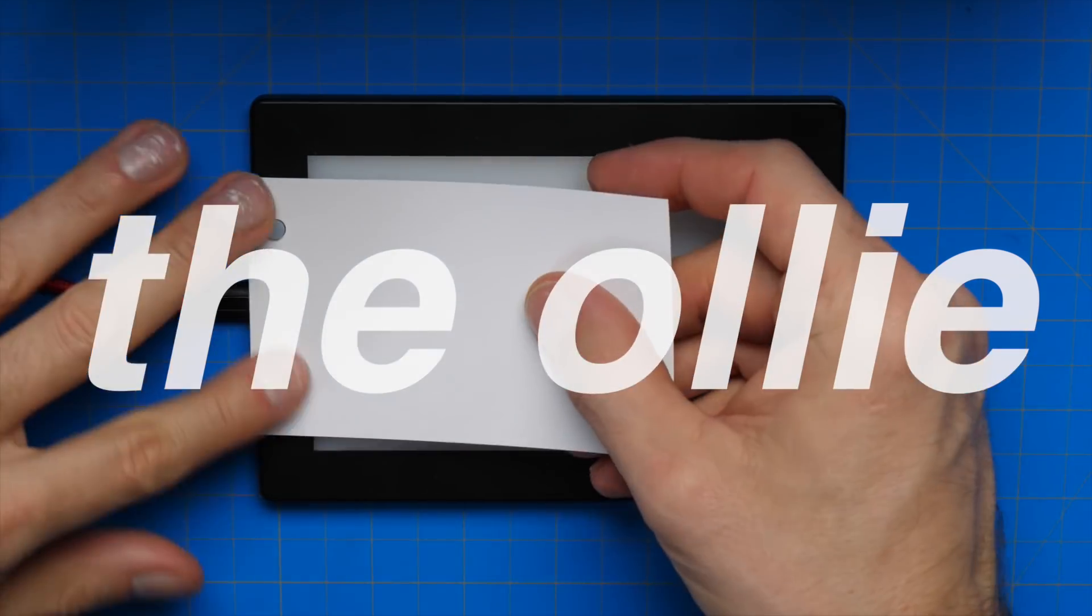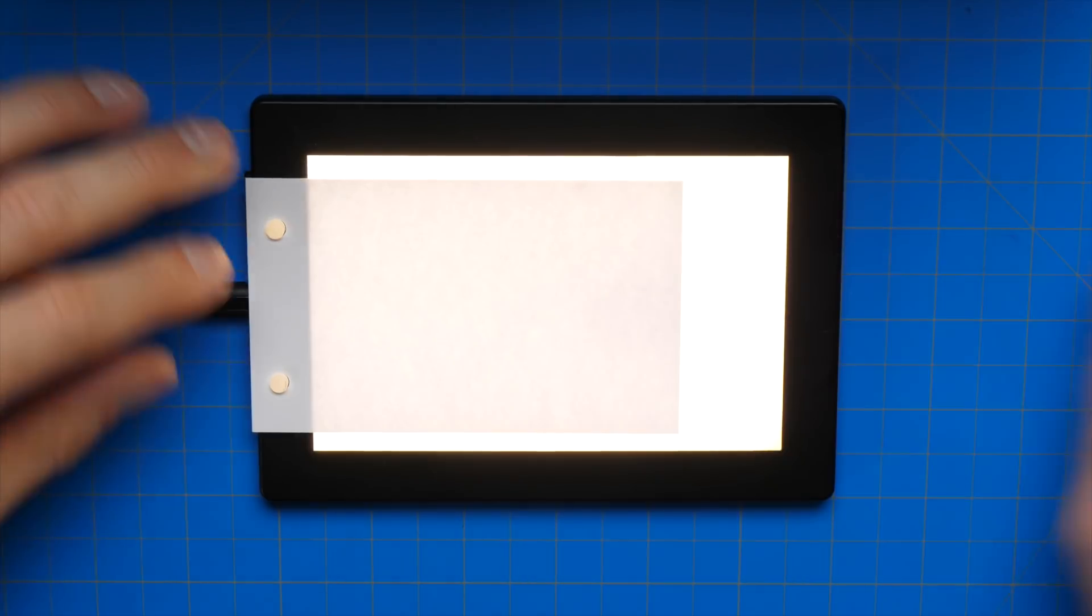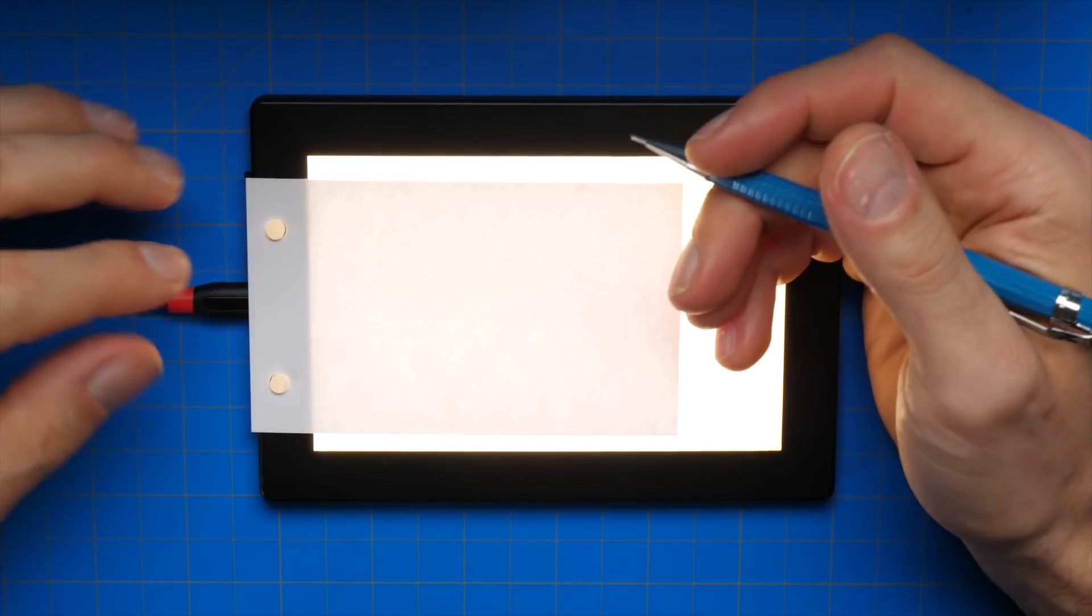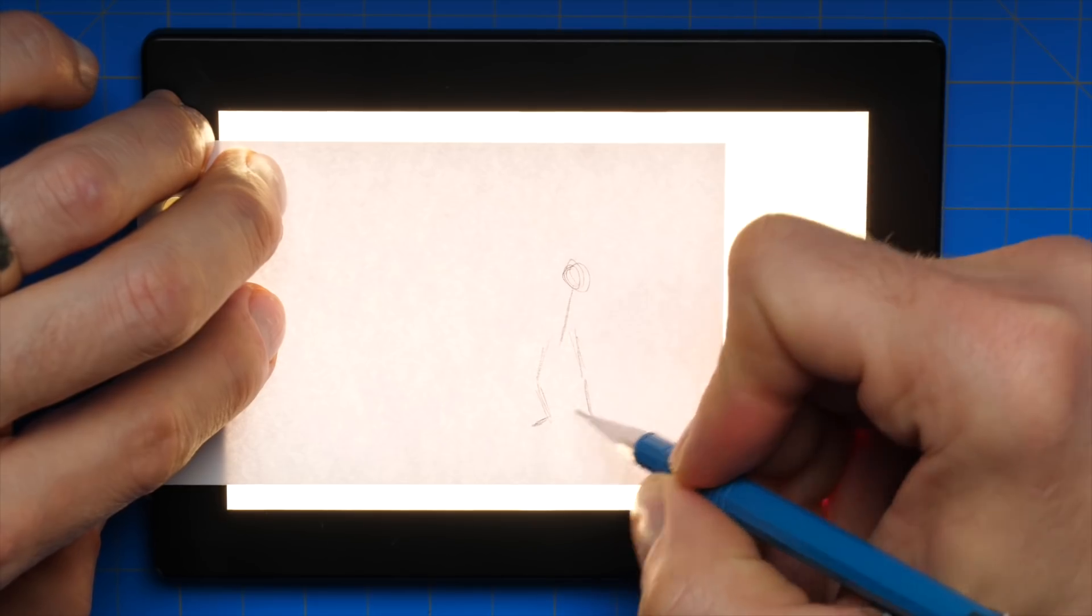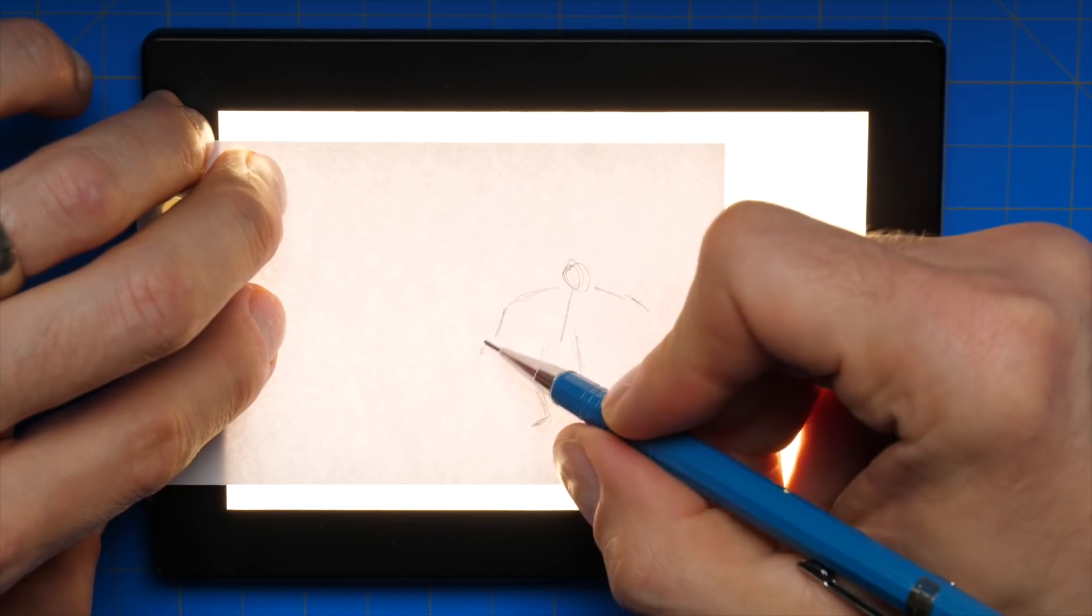The ollie. So I'm going to do an animation of an ollie using a stick figure. It's probably the most essential trick you can learn as a skateboarder because it's really the basis for so many other tricks.